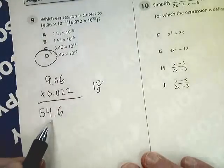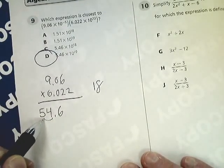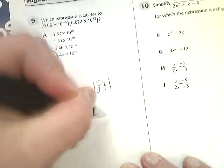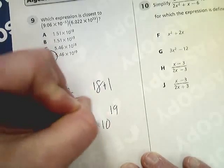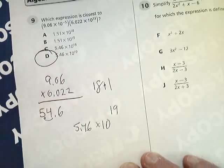But then since your decimal point's here, you'd have to flip it up one more, so plus one more gives you 10 to the 19th power. So you get 5.46 times 10 to the 19th power.